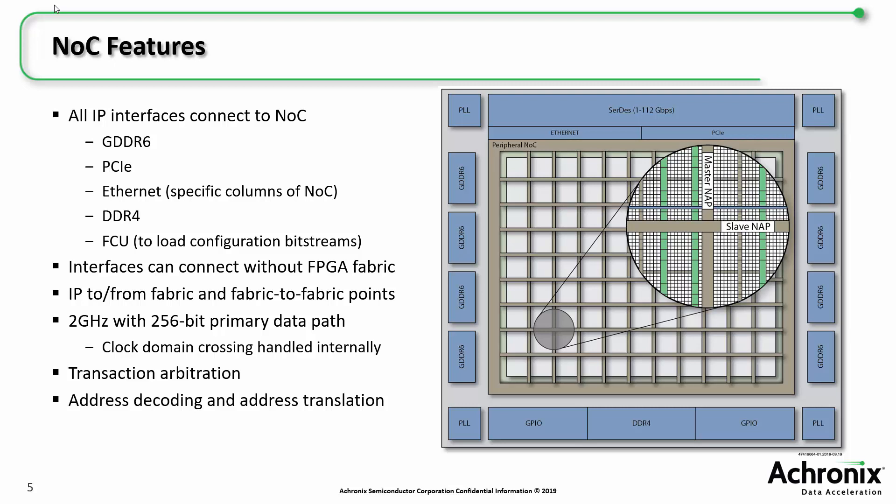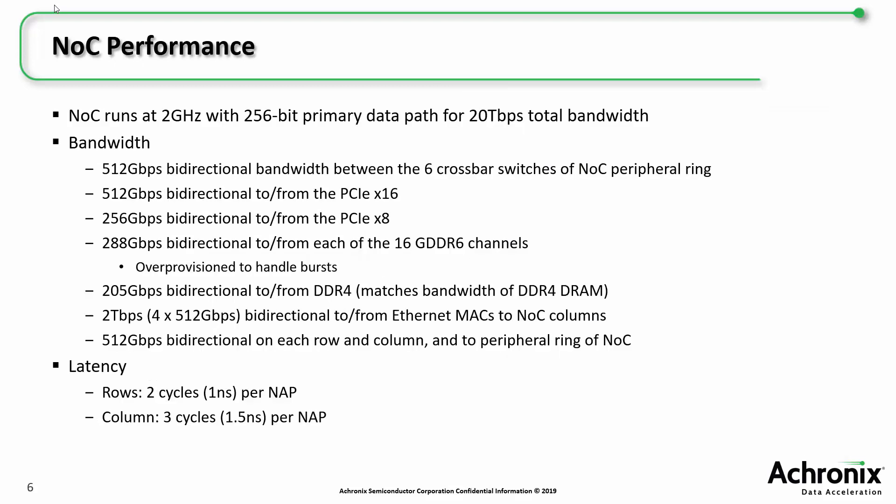The NOC runs at 2 GHz and has a 256-bit primary data path. All clock domain crossing is handled internally, along with transaction arbitration, address decoding, and address translation. So what kind of performance can you expect when using the NOC?